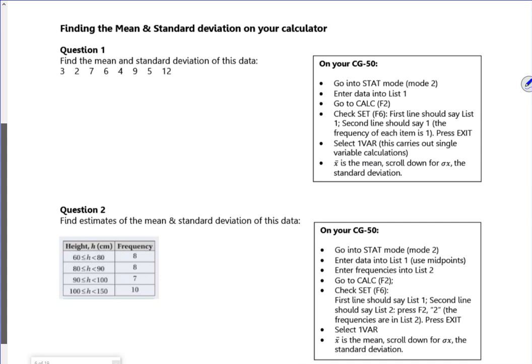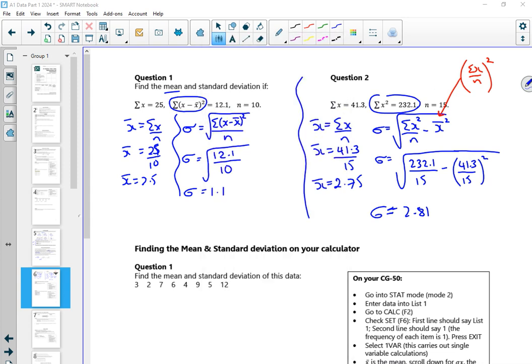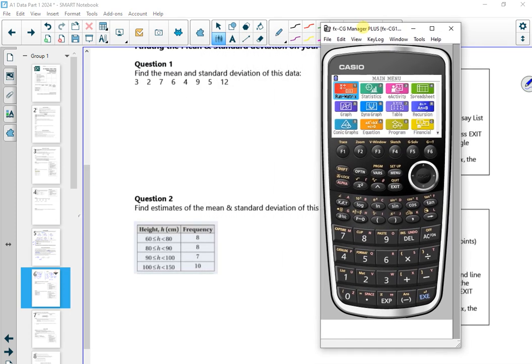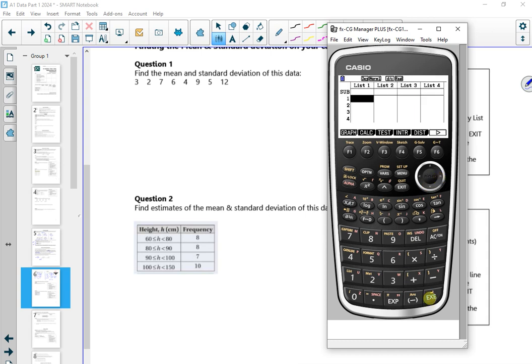So it says find the mean and standard deviation. I'll do it in the calculator so you can see it there. I've got one set of information. If I go into F2 statistics and then do F2 for calc, I'm going to check the setup. If it's list 1, 1, I just put my numbers in. If it's list 1, list 2, I need to put 1s in the frequency column in list 2. So this is list 1, 1. So that's fine.